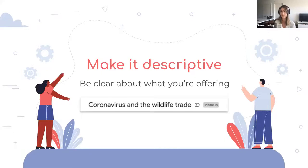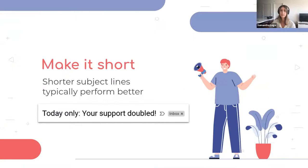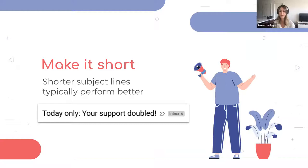There's a resource at the end of this section with an exhaustive list of words you shouldn't use in your subject lines. You also want to make it short — shorter subject lines typically perform better. In marketing we aim for about 60 characters or less, because more and more people are opening emails from their phones. If your subject line is too long it gets truncated — cut off with ellipses — and all that work crafting your perfect subject line goes out the window.